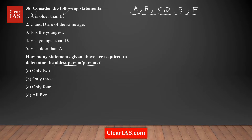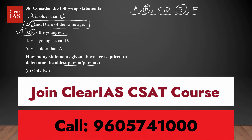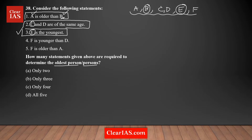Out of six people, you need to find who is the oldest. First, figure out which statements are mandatory. Statement 3 is mandatory because it is the only statement that gives information about E. Similarly, statement 2 is mandatory because it is the only statement giving information about C. Statement 1 is also mandatory as it is the only statement giving information about B.